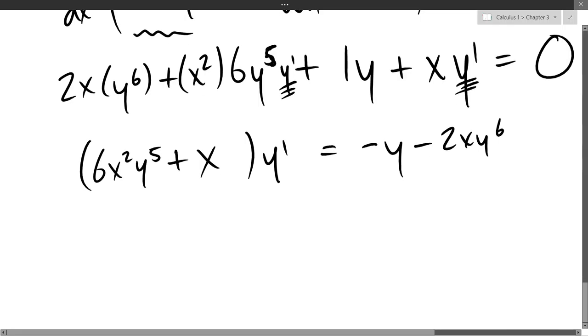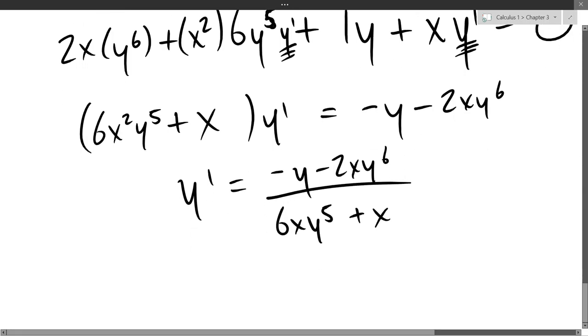What's left over? Everything has a y prime in it, so I'm going to factor that. I'm left with 6x squared y to the 5th plus x. What is the last step? Divide. So DSFD divide - y prime equals divided by 6xy to the 5th plus x.